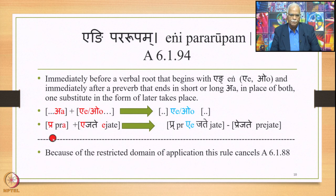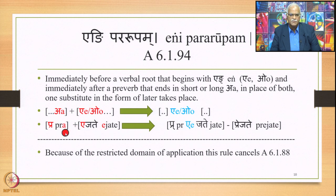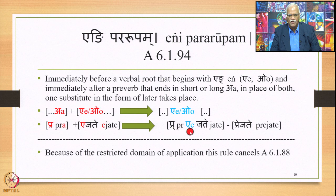For example: pra plus ajate — pra is a preverb, a (to tremble) is the verbal root. The preverb ends in A and the verbal root begins with A; they are in close proximity — Samhita. So 6.1.94 applies and the output generated is prajate.